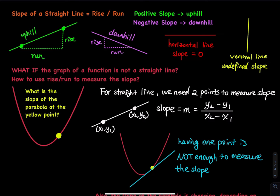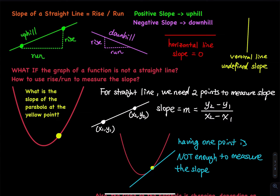So we have all the case scenarios. The first case is the line is going uphill. I have a green line. The green line is going uphill, therefore the slope is positive. How do you measure the slope of this line? First we need two points and then we do rise over run. So we run a few units to the right and then we go a few units up. So the run.